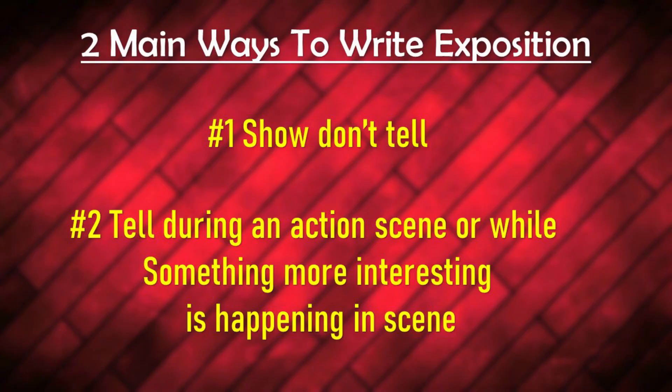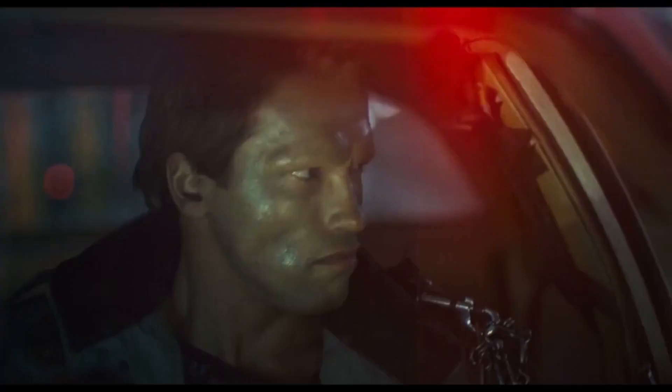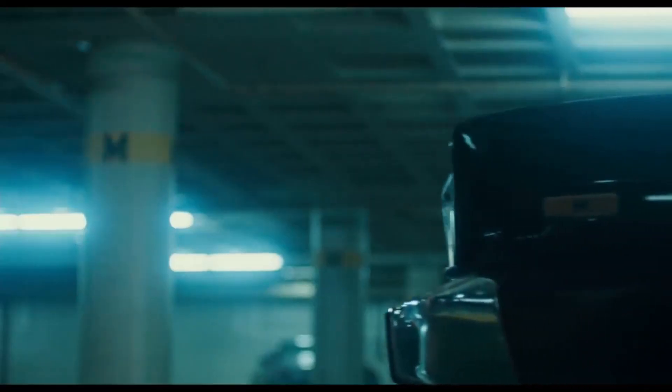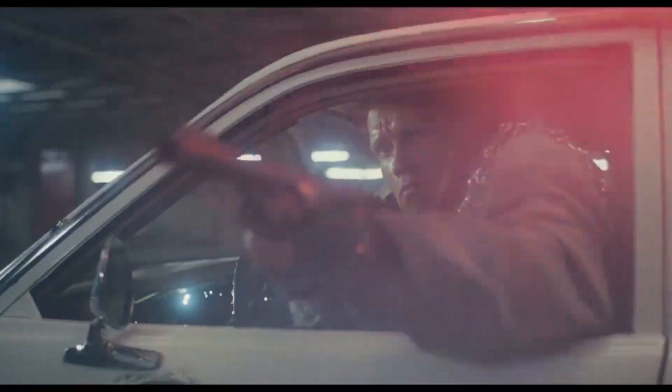The wrong way to write exposition is where you have two characters sitting there plainly explaining what's happening. That can be boring and uninteresting, and there's no avoiding it entirely because it's a necessary evil to explain what is going on in the scene. The correct way to write exposition is to either show it, or if you have to write it, try to write it in an interesting way — or during an action scene.